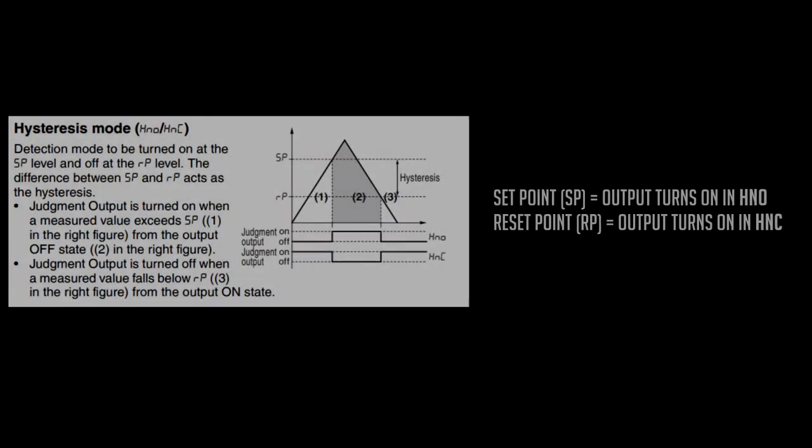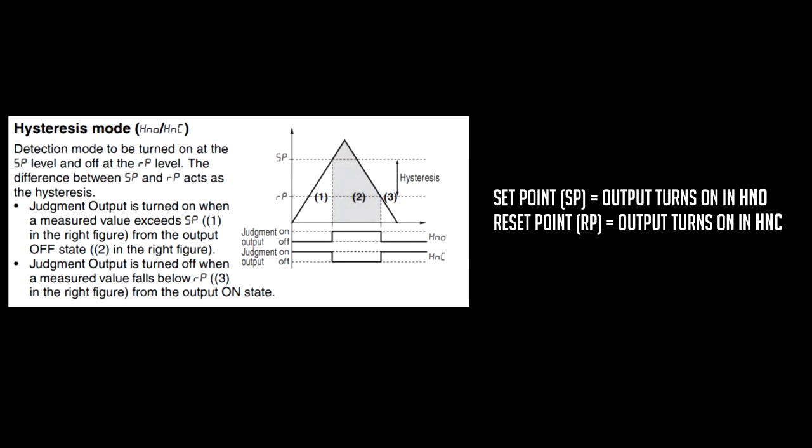So, one of the methods for a discrete output is called hysteresis mode. In hysteresis mode, you have an SP, or a set point, and an RP, or a reset point. For hysteresis normally open, or HNO, your output will turn on at the SP level, or set point. For hysteresis normally closed, or HNC, your output will turn on at the reset point, or RP.